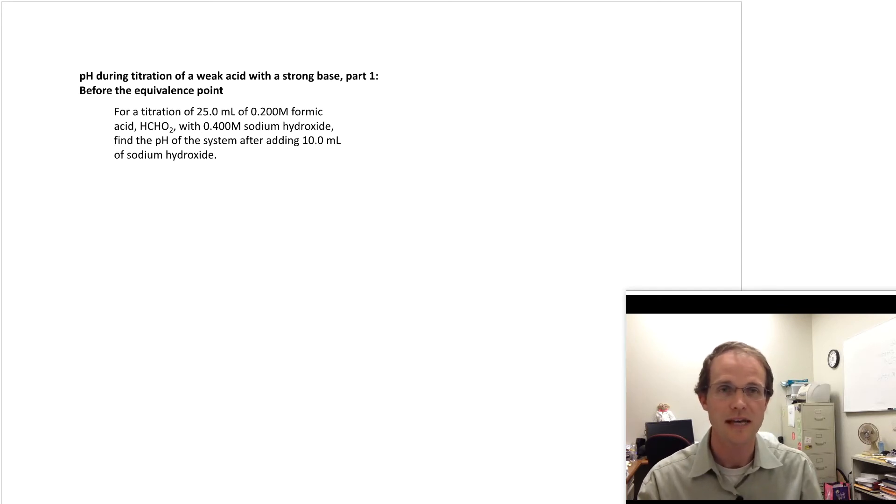So what we're going to do is we're going to take 25 milliliters of 0.2 molar formic acid and we're going to titrate it with 0.4 molar sodium hydroxide. And what we're asking for is, what's the pH of the solution after we've added 10 milliliters of 0.4 molar sodium hydroxide?